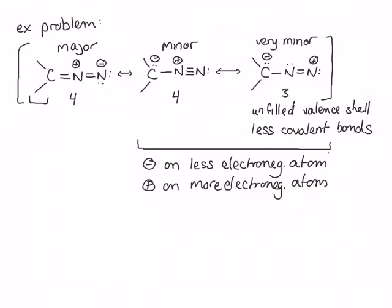It's okay to just label the second and third as minor contributors, but to be as specific as possible: the first structure is the major contributor because, while it does break rule three, all three structures break rule three equally, so it still comes out as the major structure compared to the other contributing structures here.